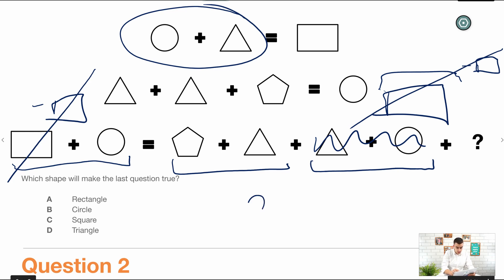So if I was to redraw the equation, circle equals pentagon plus triangle.